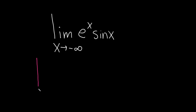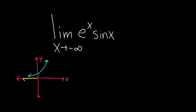If you think about the graph of e to the x — and thinking about the graph is usually a good way to do problems in math, because oftentimes you can figure out the answer or at least what you think it should be — the graph of e to the x looks like this. You see that as x approaches negative infinity, as your x's get smaller and smaller, the y value which is e to the x gets closer and closer to zero. So as x approaches negative infinity, e to the x will approach zero.